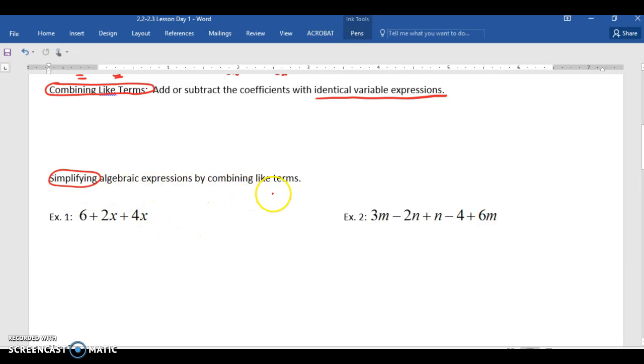The first example, I have three terms in this expression, and I want to simplify it by combining like terms. I'm going to put a triangle around 6, it's a constant. Is there any other constant in this algebraic expression that I can combine 6 with? No. So I move on to my next term, 2x. Is there any other x term I can combine it with? Yes. What is 2x plus 4x going to give me? It's going to give me 6x. Do I have anything to combine the 6 with? No. So I bring it down.